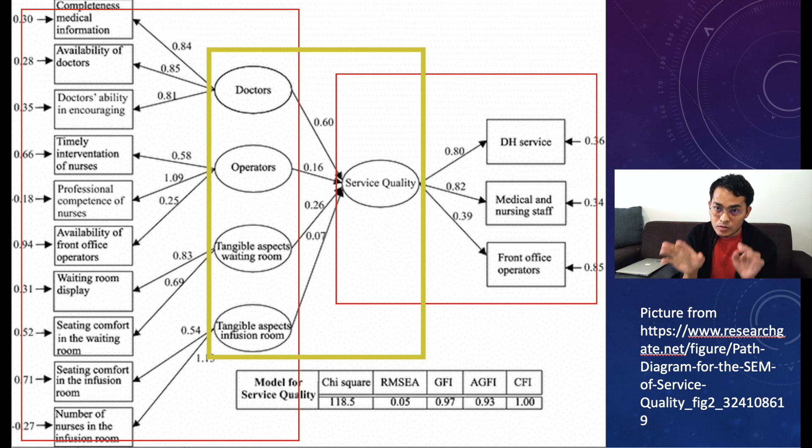So here, two measurement models from independent variables and dependent variables. And the square, the yellow color, this is the path model.